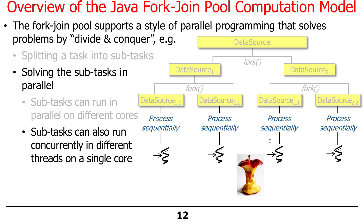If you only have one core, you could run all the different threads in a time-sliced manner on that single core. That might be a win in some cases, but to be honest, using a fork-join framework or any kind of parallel computing infrastructure on top of a single core is probably not worth it. There are times when it might be, especially with IO-bound jobs and a good OS scheduler with direct memory access, but as a general rule of thumb, these things are meant for multi-core platforms.